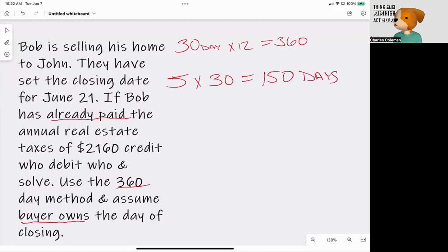Then they own it for another 20 days in June. So we're going to add 20 on top of this, which is going to give us 170 days that Bob owns the home. Perfect. So now we figured out that.